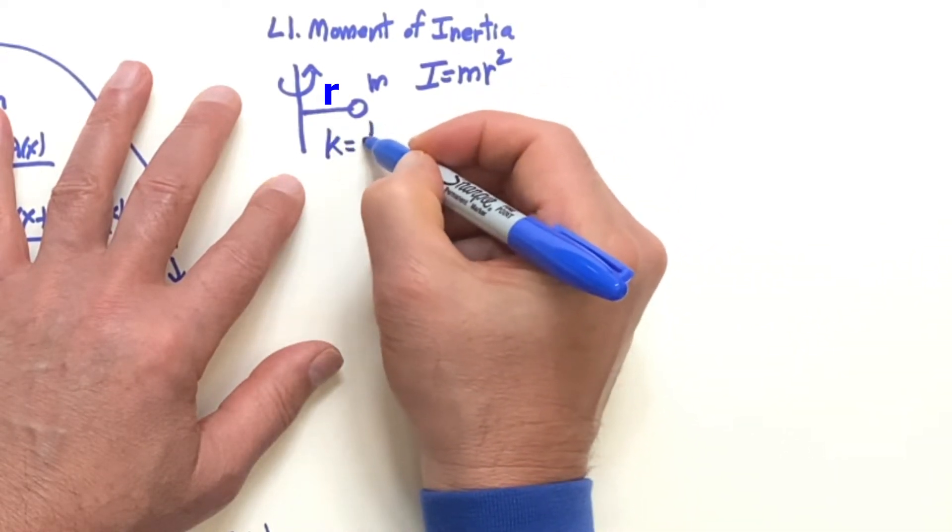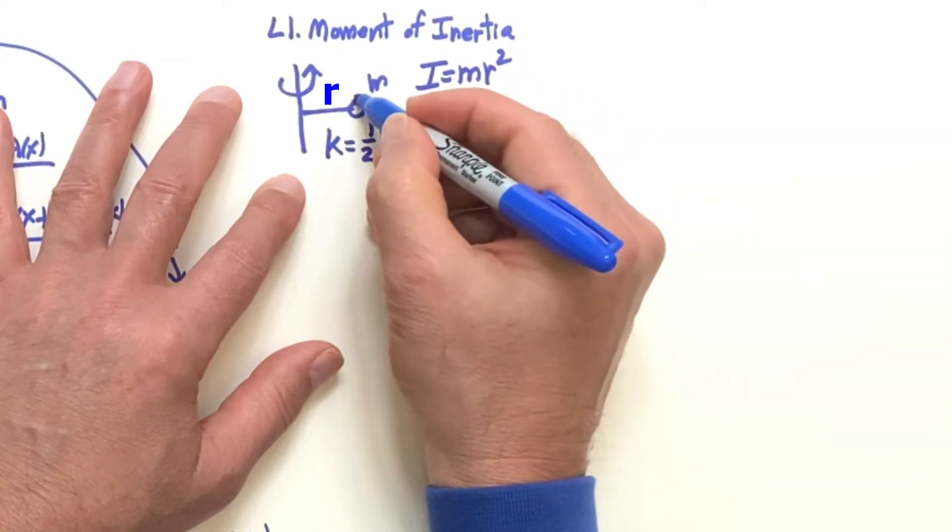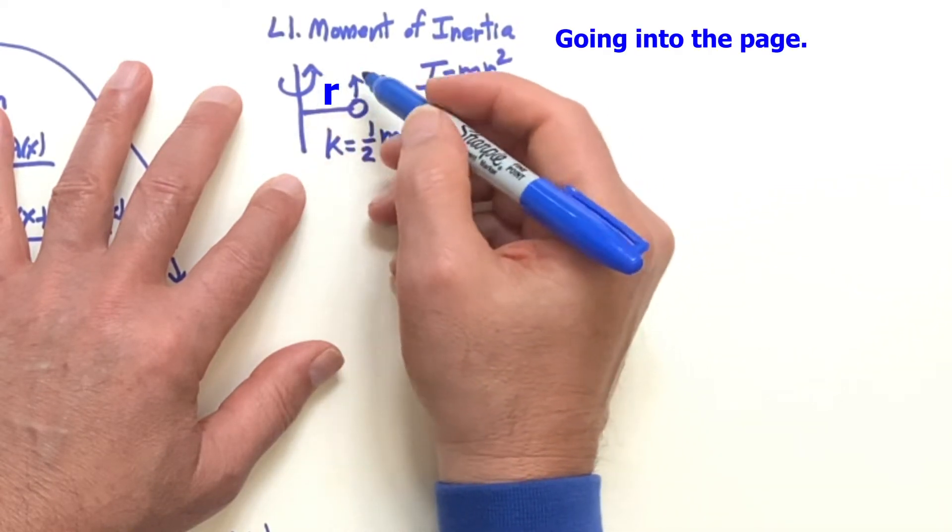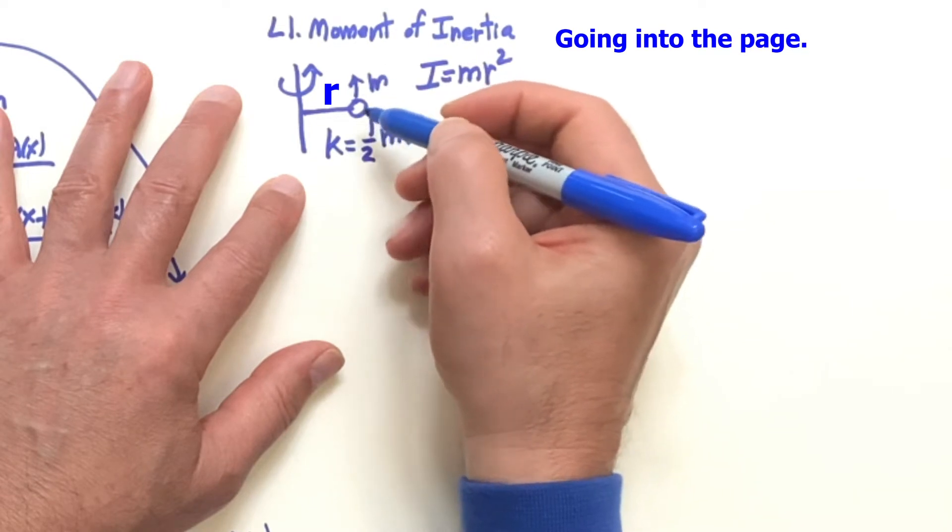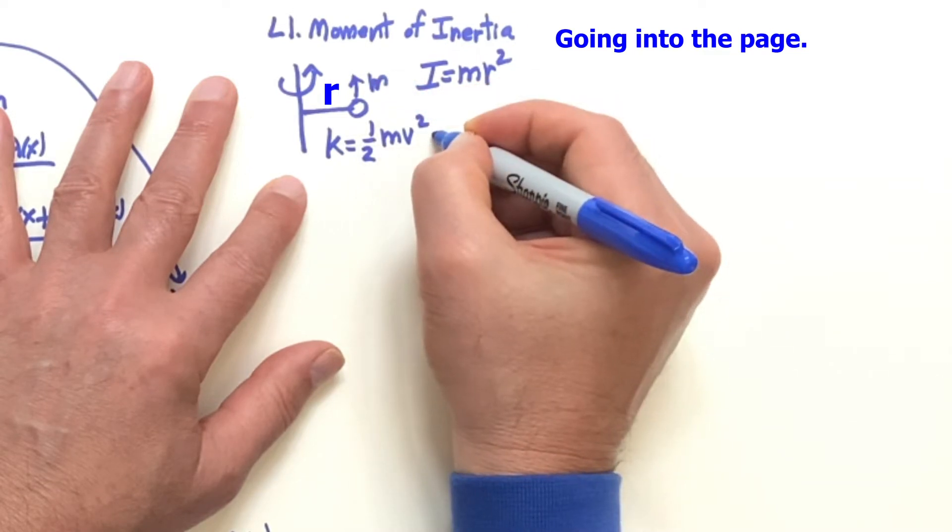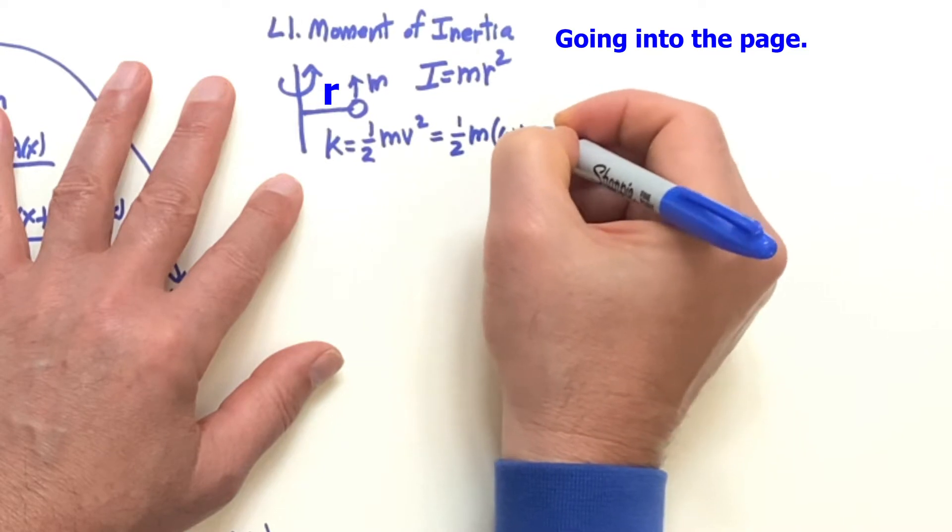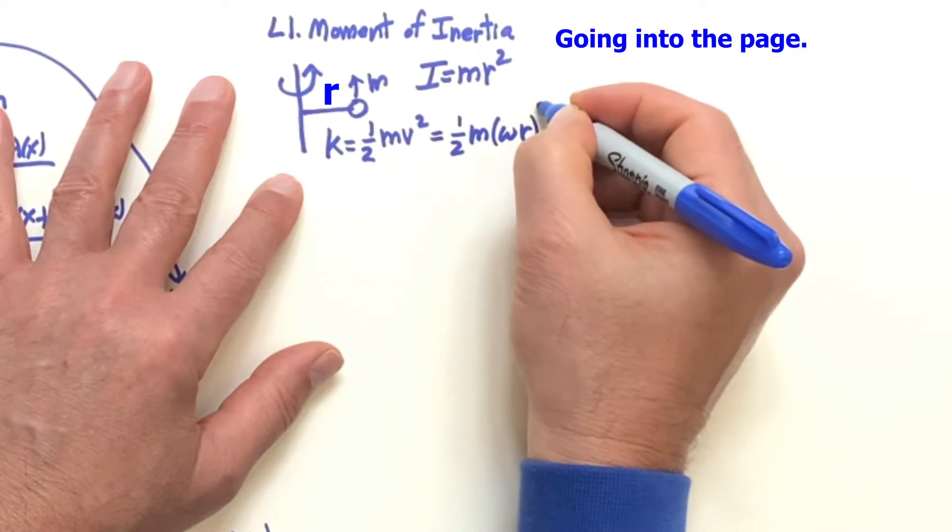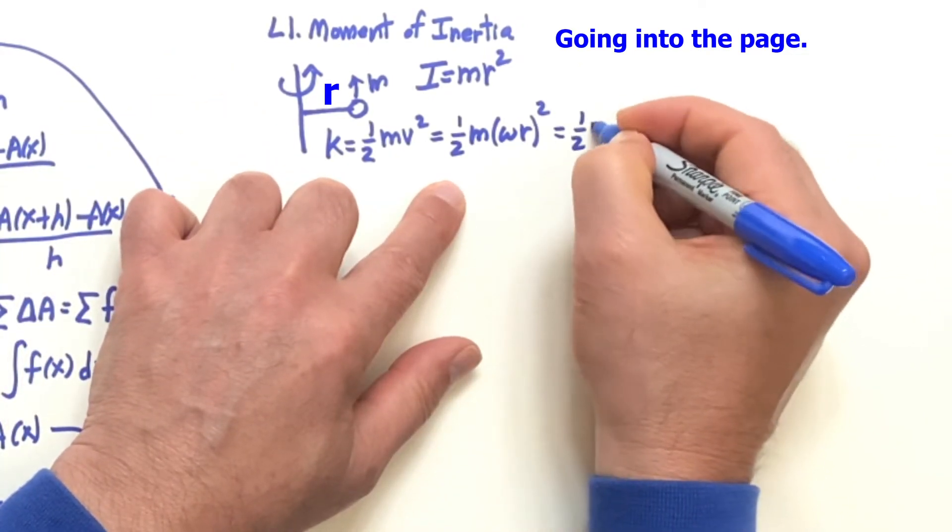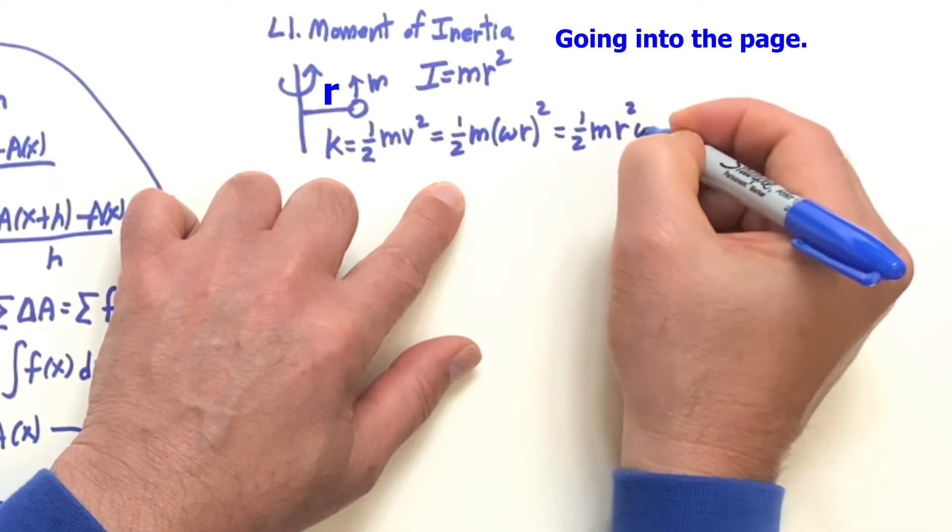The kinetic energy is one-half m v squared. This is your tangential velocity. You think of like a car going at a certain speed in a circle. And this is one-half m, v is omega r squared. And this is then one-half m omega squared r squared. I'll put the omega squared second.